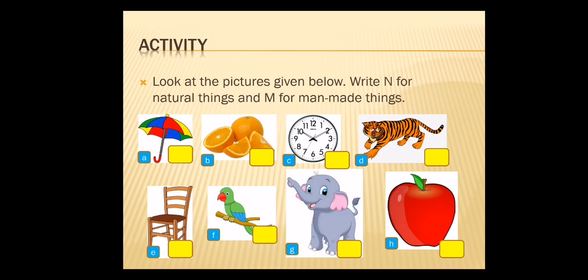See the picture — first one: umbrella. Is this natural or man made? Yes, the umbrella is made by human, so it is man made. You can write the letter M. Second one: orange. Is this a natural thing or man made thing? Yes, it is natural, so you can write the letter N.